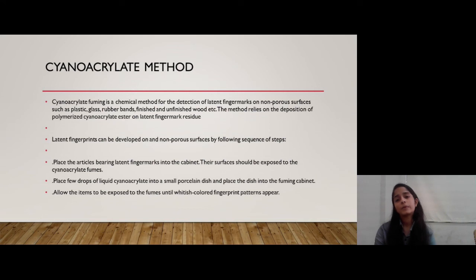They are telling us the steps. Now, I'm going to show you the steps that are involved. Place the articles bearing latent fingerprints into the cabinet. Their surfaces should be exposed to cyanoacrylate. You'll put cyanoacrylate into a chamber kind of thing. It may be of glass. You'll put it into it and you will put that few drops of cyanoacrylate into small porcelain dish and place the dish into fuming cabinet. Now, we'll allow the items to be exposed to the fume until whitish colored fingerprint patterns appear.